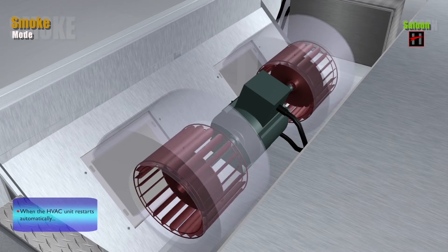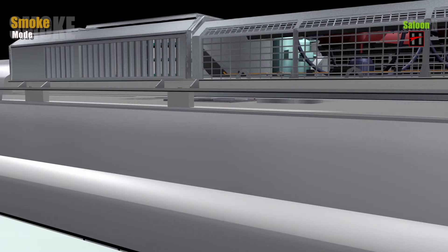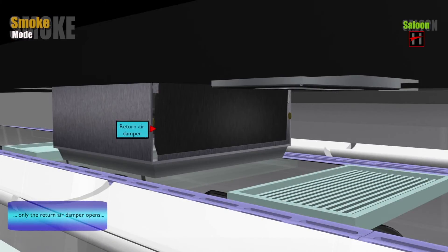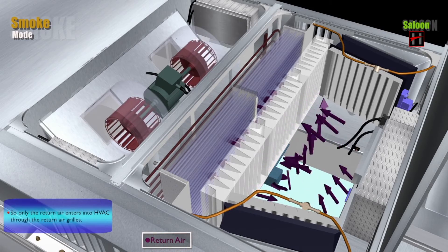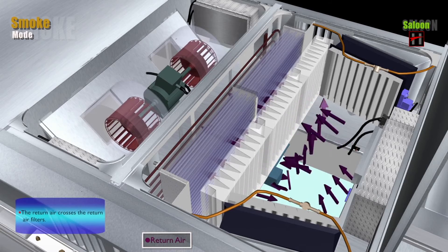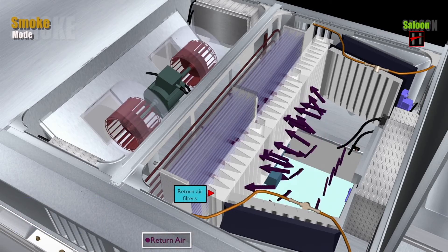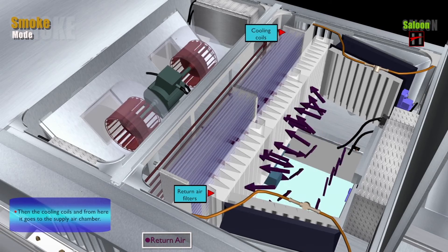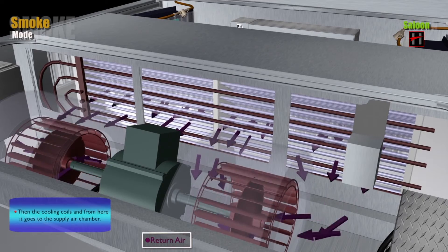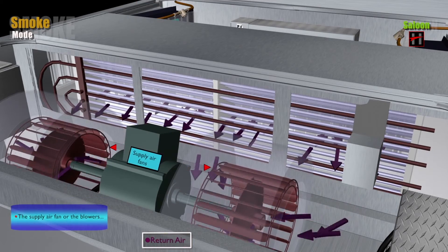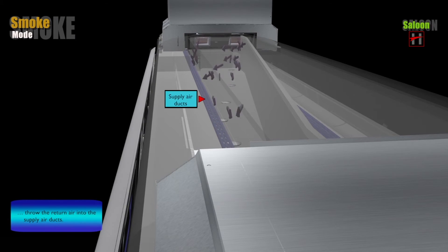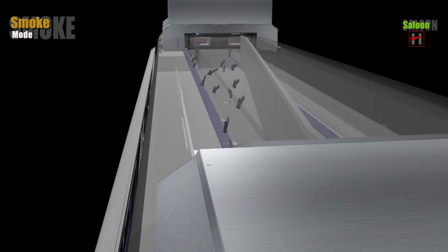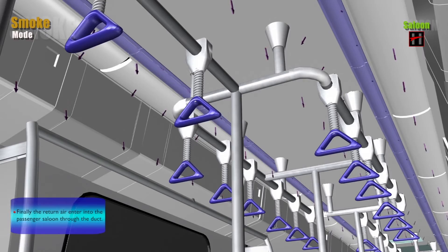When the HVAC restarts automatically, only the return air damper opens. So, only the return air enters into the HVAC through the return air grills. The return air crosses the return air filters, then the cooling coil, and from here it goes to the supply air chamber. The supply air fans or the blowers throw the return air into the supply air ducts. Finally, the return air enters into the passenger saloon through these ducts.